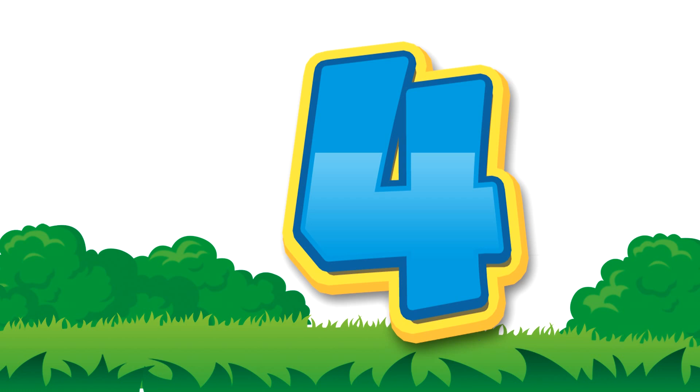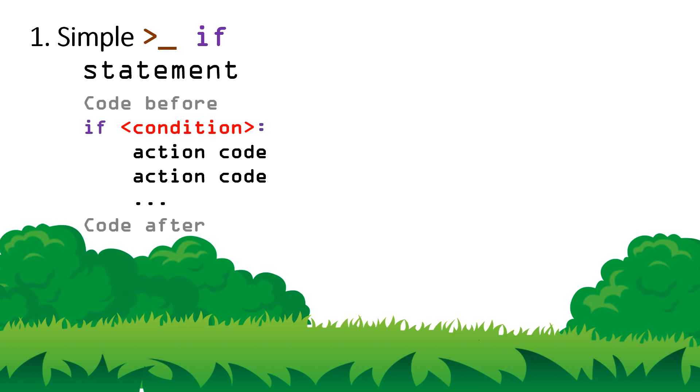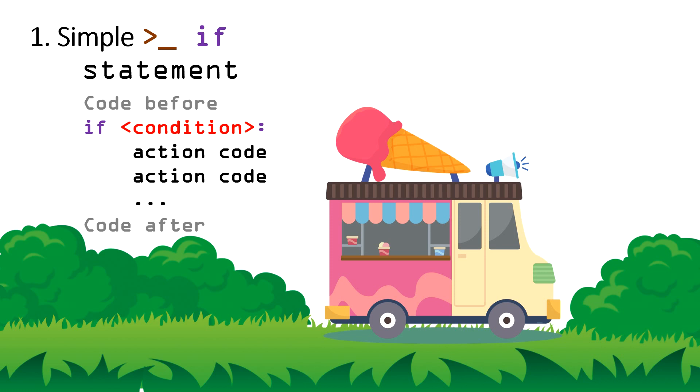There are four types of if statement. First one: a simple if statement. This is how a simple if statement looks like in your code. But before that, let me give you this example. While Little Red Riding Hood was walking in the forest, she passed by an ice cream truck on the way to her grandmother's house.